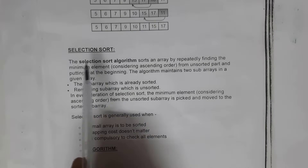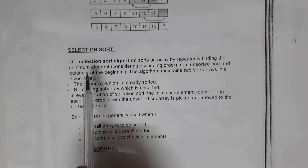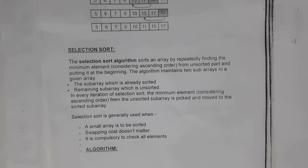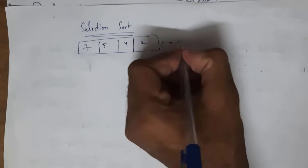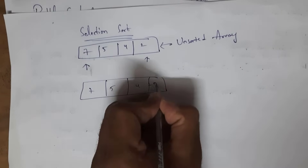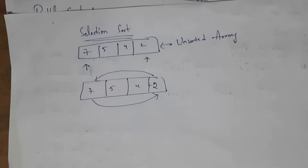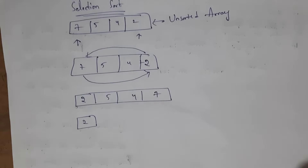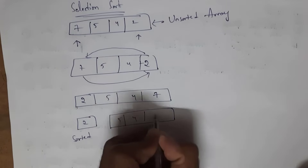Next I will explain selection sort. Selection sort algorithm sorts an array by repeatedly finding the minimum element from the unsorted part and placing it at the beginning. Selection sort maintains two arrays: one sorted and one unsorted. For example, in the unsorted array, selection sort finds the minimum element — which is two — places it at the beginning, and moves seven to where two was. Now two is considered the sorted array and the remaining elements (five, four, seven) are the unsorted array.